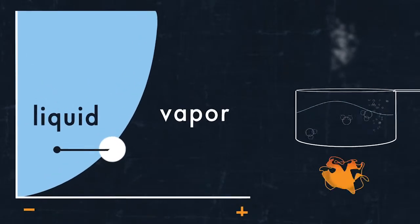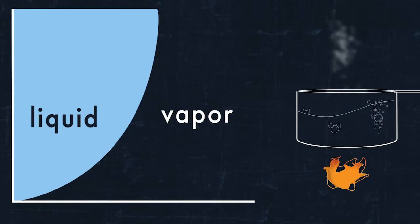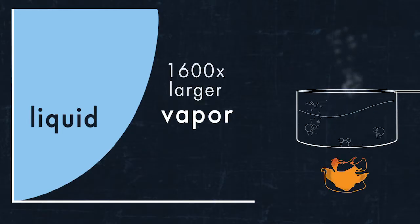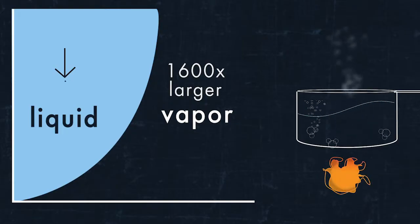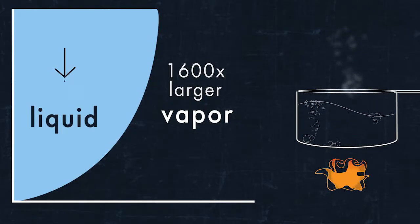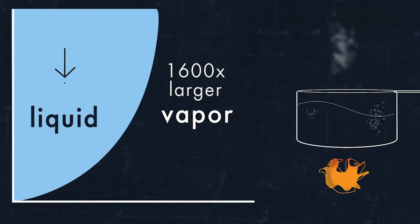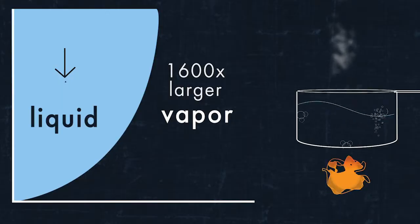Crossing the phase boundary has a huge effect on a water molecule's size. The vapor molecule is about 1,600 times larger than a liquid molecule. It's a good thing the water in our pot boils off slowly. If it were somehow possible for all of the water to cross the phase boundary at once, a steam explosion would blow up our kitchen.